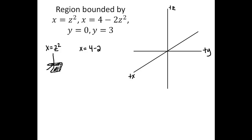X equals 4 minus 2Z squared is also going to be a parabolic cylinder that extends parallel to the Y axis. In the XZ plane, this is going to be a parabola. It's going to open in the negative X direction, and the vertex is going to be at 4 on the X axis. The Z intercepts — when X is 0 — will be plus and minus square root of 2. The parabola opens in the negative X direction, and then the cylinder extends parallel to the Y axis, giving us a parabolic cylinder.